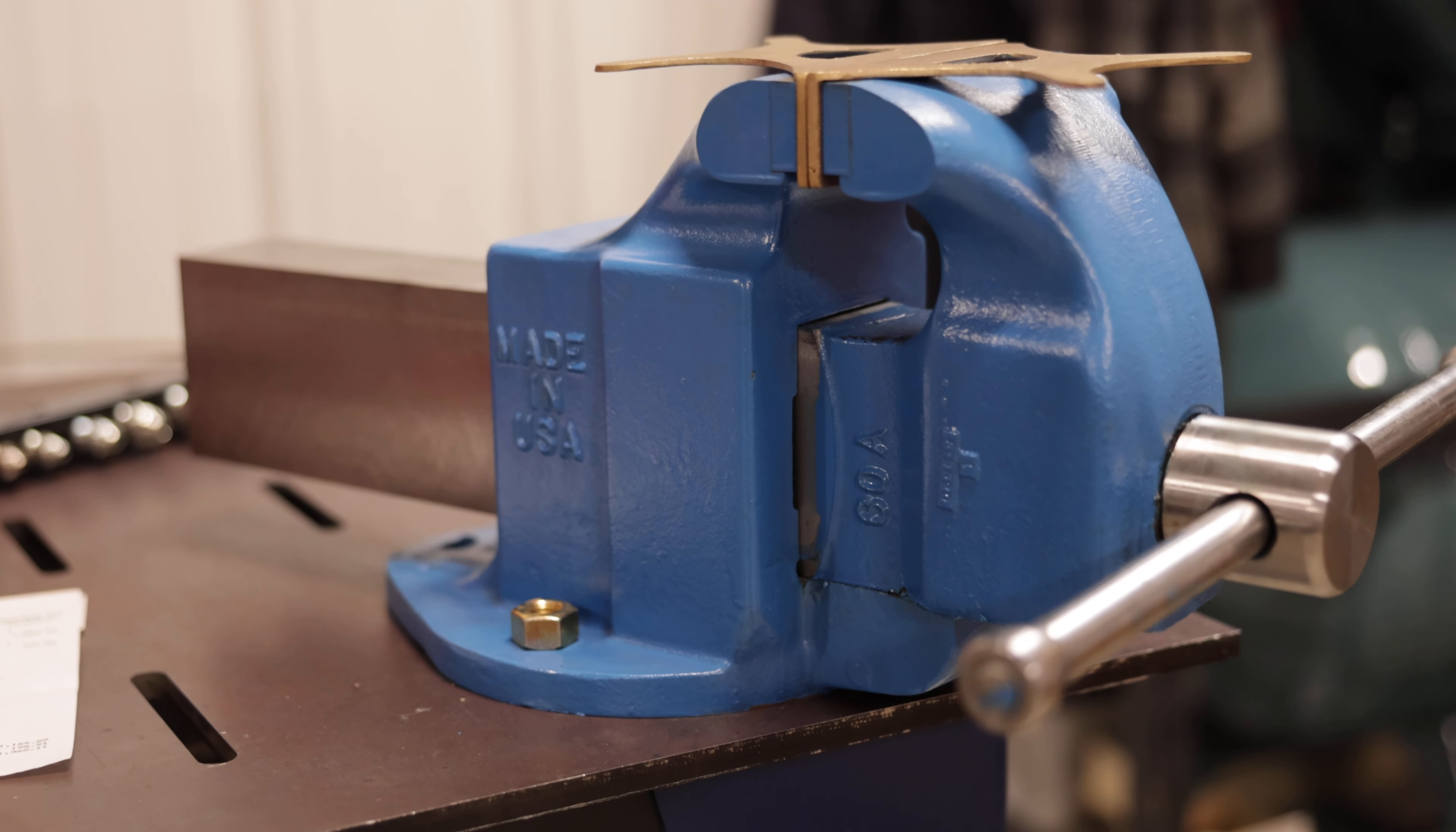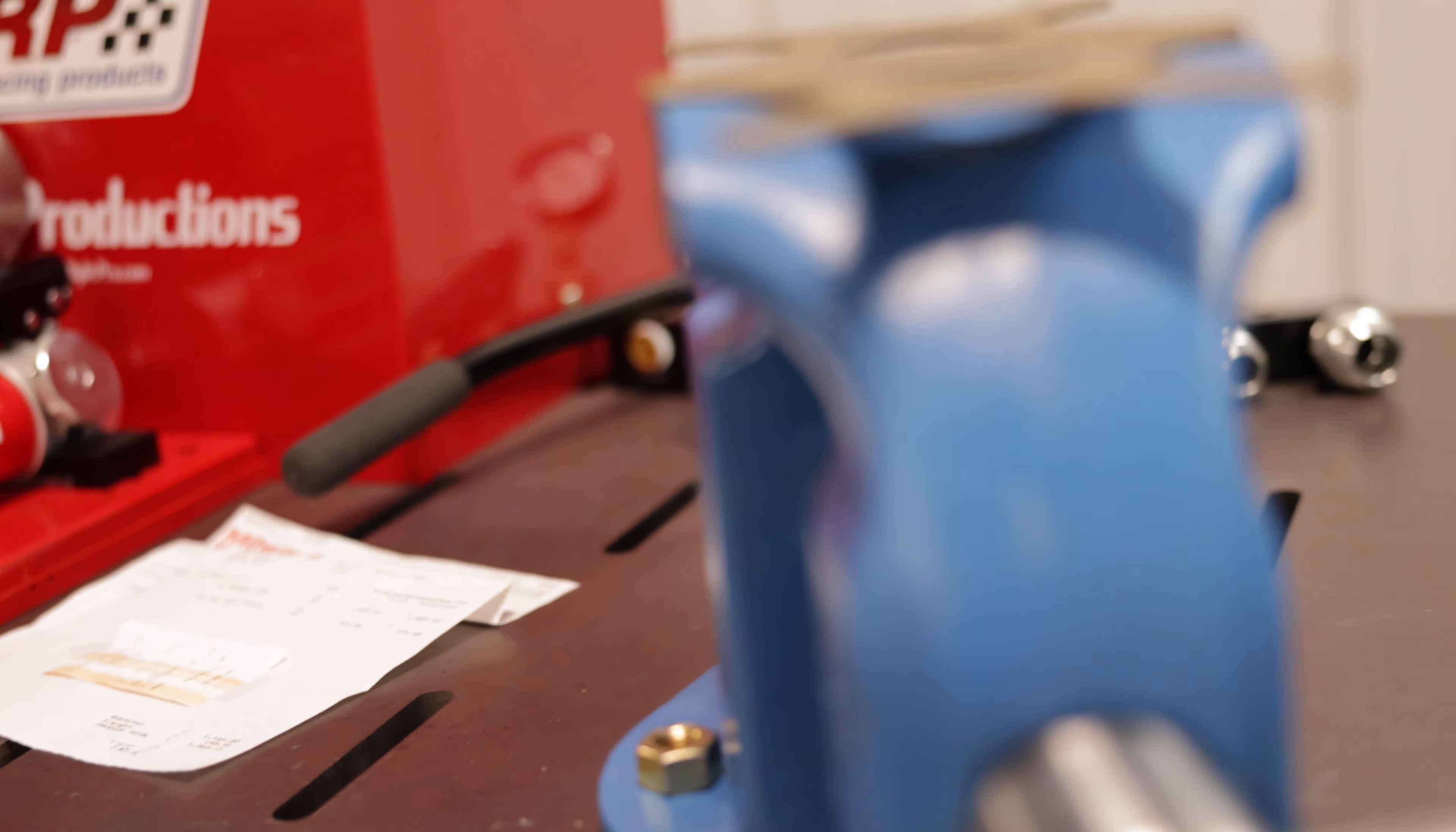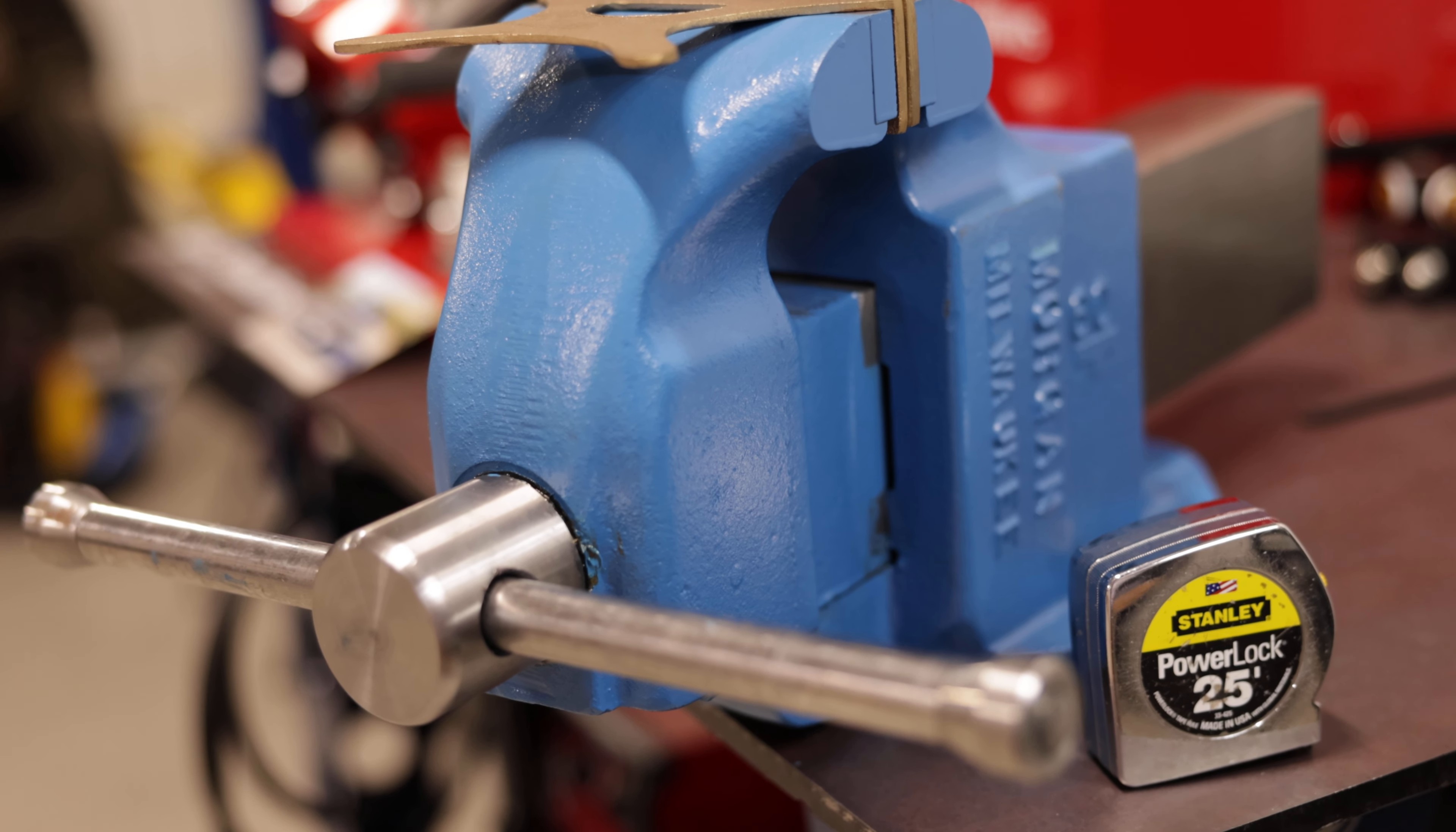If you guys were in the market for one and needed to see one in person, this is what a brand new Morgan Milwaukee 60 looks like. I'll just throw in here's our Stanley tape measure just for reference and you can see how big this monster is. Like I said they have an 80 that's even bigger than this.